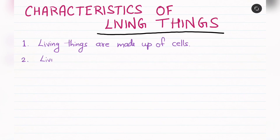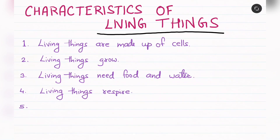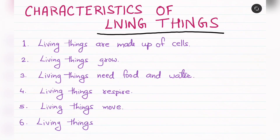The first characteristic is that living things are made up of cells. Second, living things grow. Third, living things need food and water. Fourth, living things respire. Fifth, living things move.